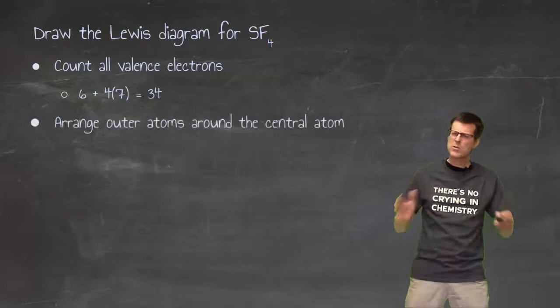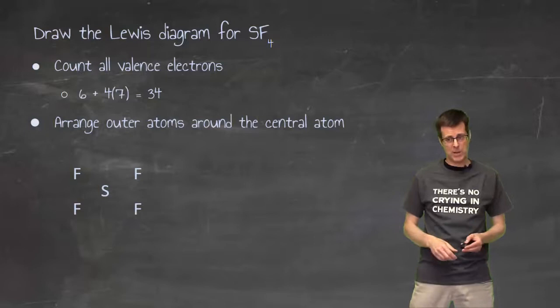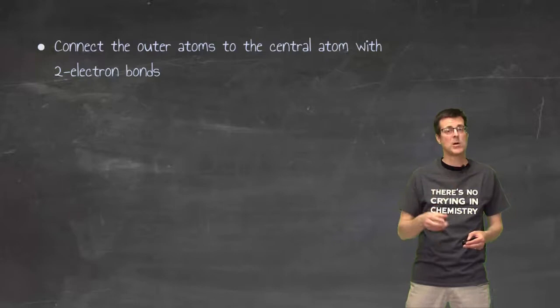Then you're going to arrange the outer atoms around the central atom. Based on what we've done before, sulfur is my likely candidate for a central atom, which means my fluorine atoms are going to go around that. I haven't got any electrons down yet. That becomes the next job, is I'm going to connect the outer atoms to the central atom with a two-electron bond. Not two bonds, not a double bond, just a single bond, but each single bond represents two electrons. So it starts to look like that.